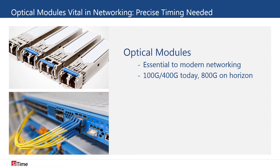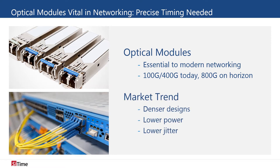400 and 800 gigabit networks are pushing optical modules to have greater functionality with denser designs, lower power, and lower jitter than their predecessors. Collectively, these market trends are pushing the boundaries of oscillator technology.